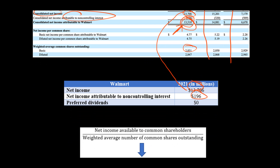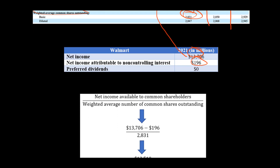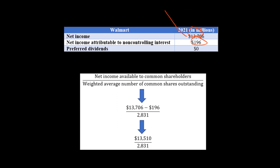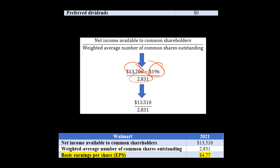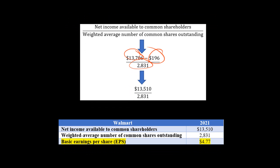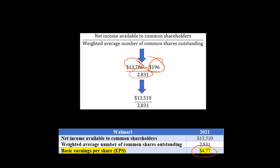For the denominator, the weighted average common shares outstanding is already given — 2.831 billion common shares. So plugging those numbers in: net income minus income attributable to non-controlling interest, divided by the weighted average common shares outstanding, gives us $4.77 as the basic earnings per share for Walmart.